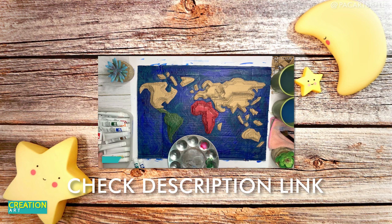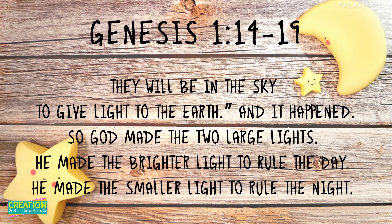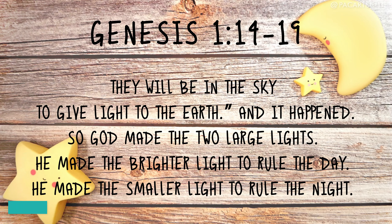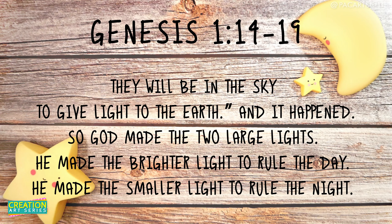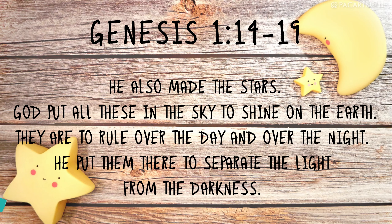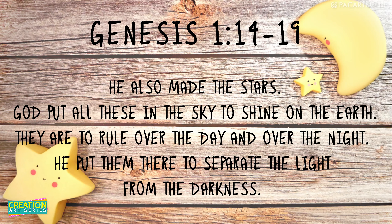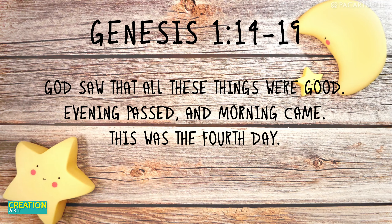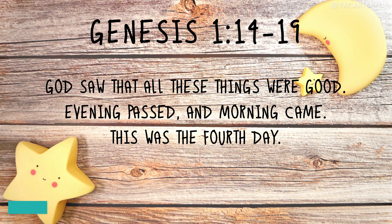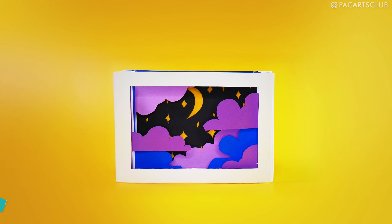Let's continue on the fourth day, on the following verses Genesis 1 verses 14 to 19: 'Then God said, let there be lights in the sky to separate day from night. These lights will be used for signs, seasons, days, and years. They will be in the sky to give light to the earth.' God made the two large lights — the brighter light to rule the day and the smaller light to rule the night. He also made the stars. God saw that all these things were good. Evening passed and morning came — this was the fourth day.